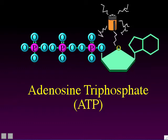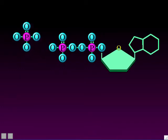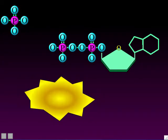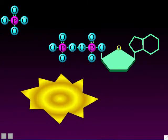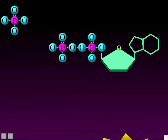ATP doesn't have electrical energy the way a battery does, but it does have a type of energy. You can think of the energy as being bottled up by the last phosphate. If that last phosphate is pulled off the ATP molecule, that releases the energy. Some protein is going to use that energy as its energy source.